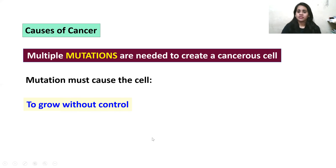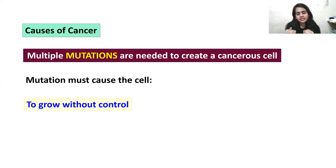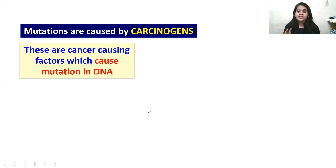Once mutation happens in the cell, the cell will grow uncontrollably. It will not multiply in arithmetic or geometric progression — where one cell divides to form two, then two divide to form four. Instead it will divide uncontrollably, because the cell has undergone cancerous changes, and it will also become immortal.